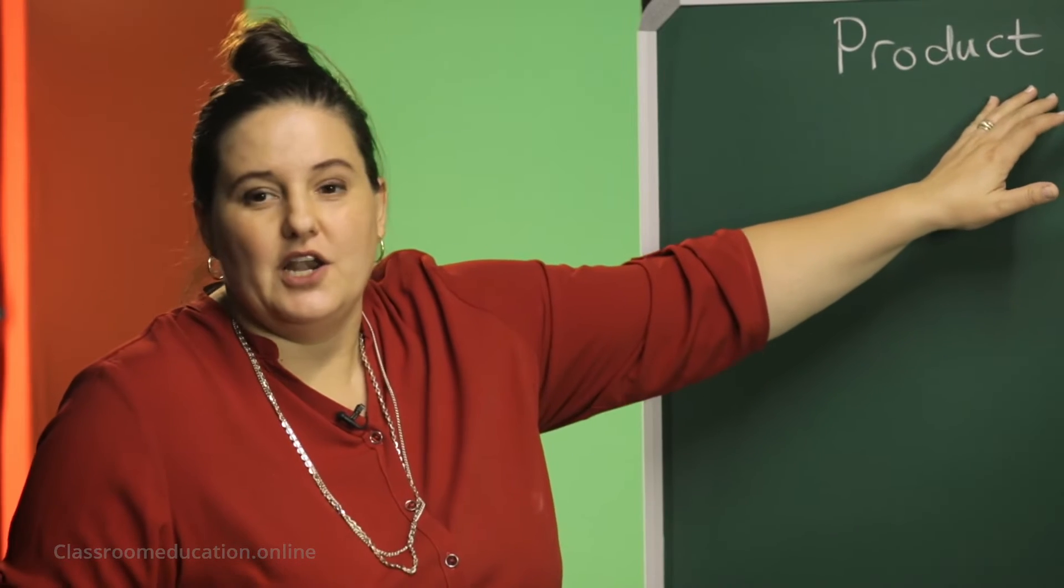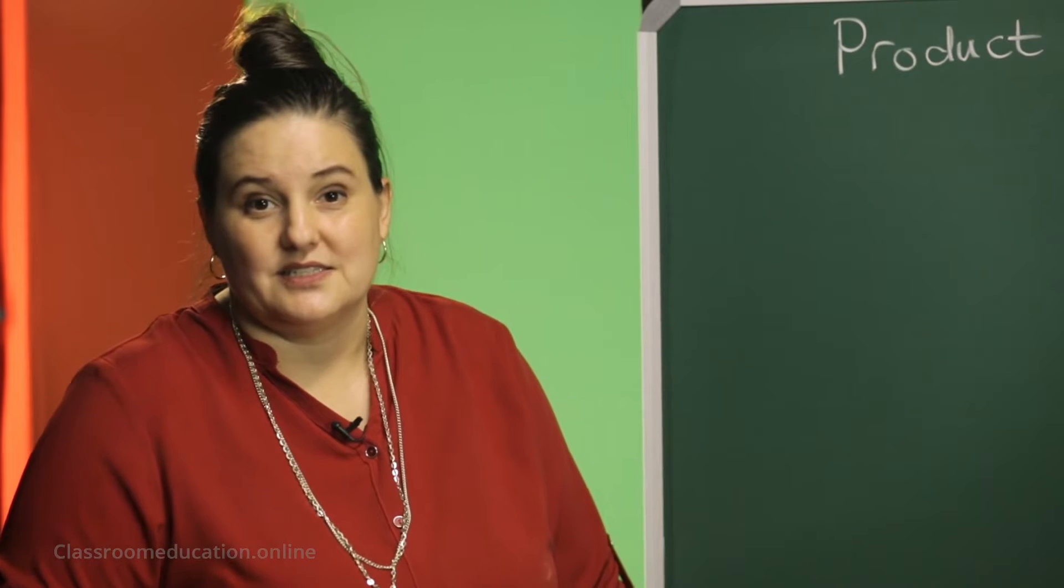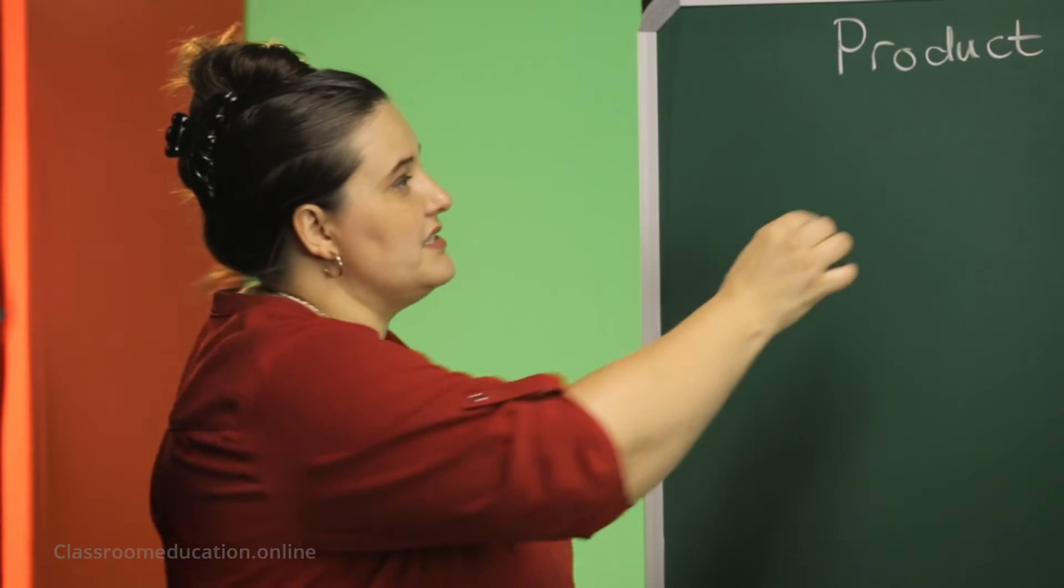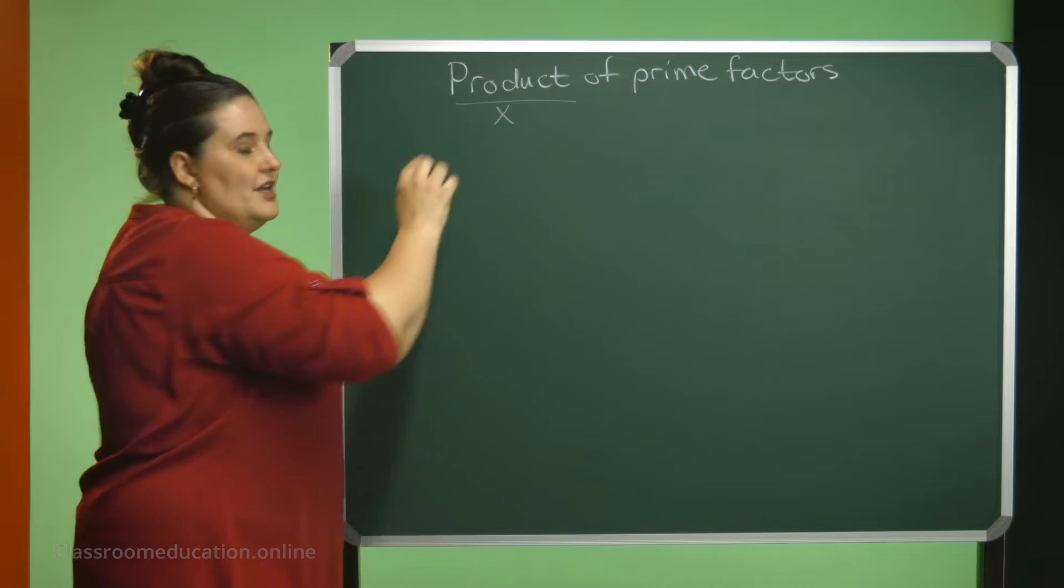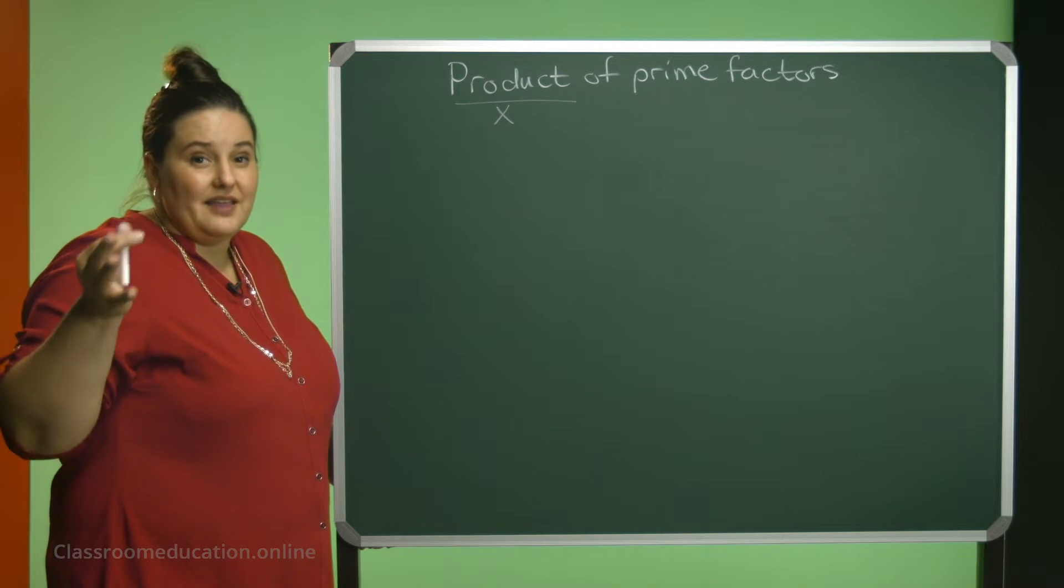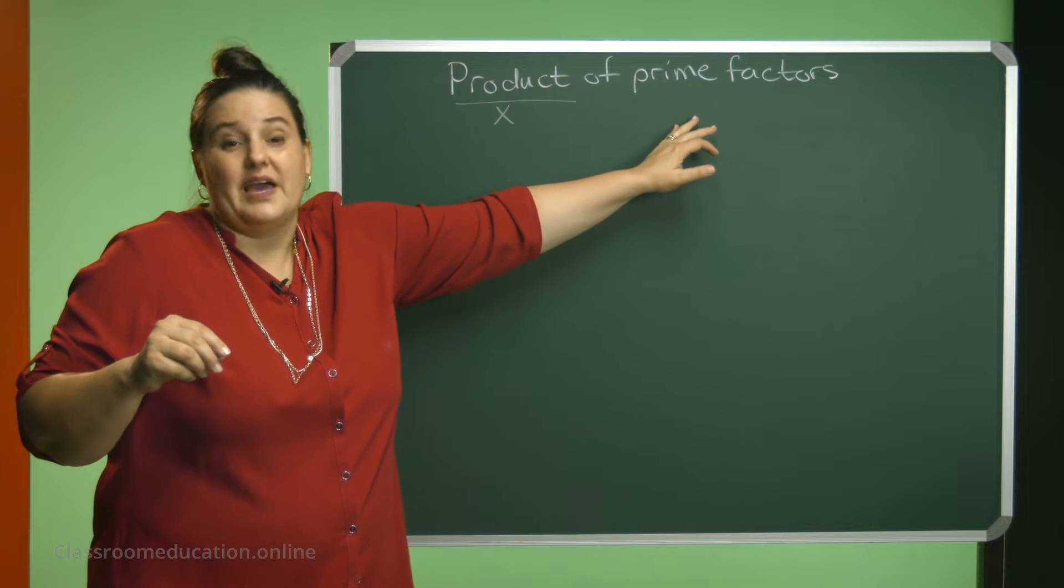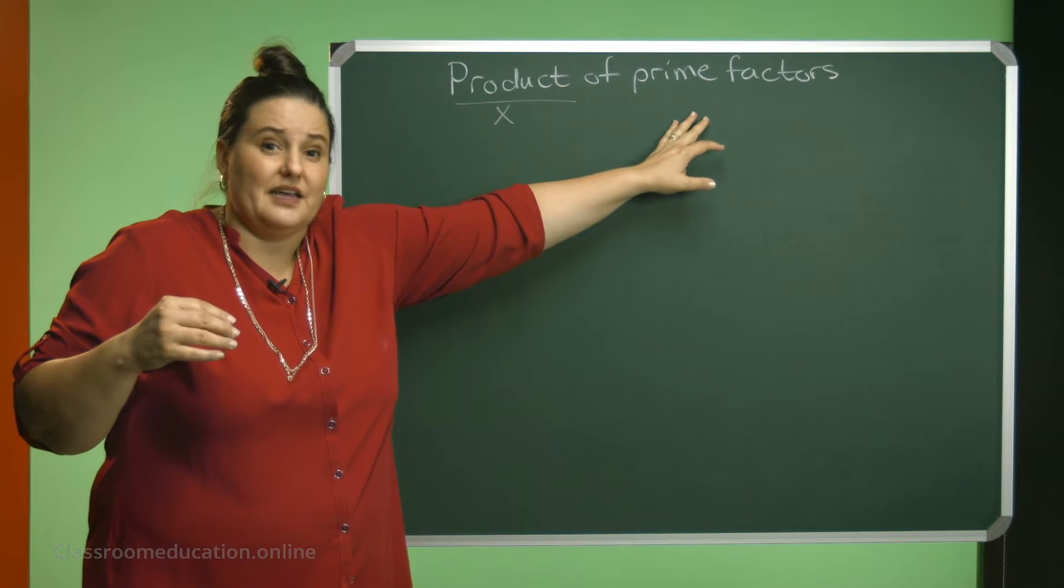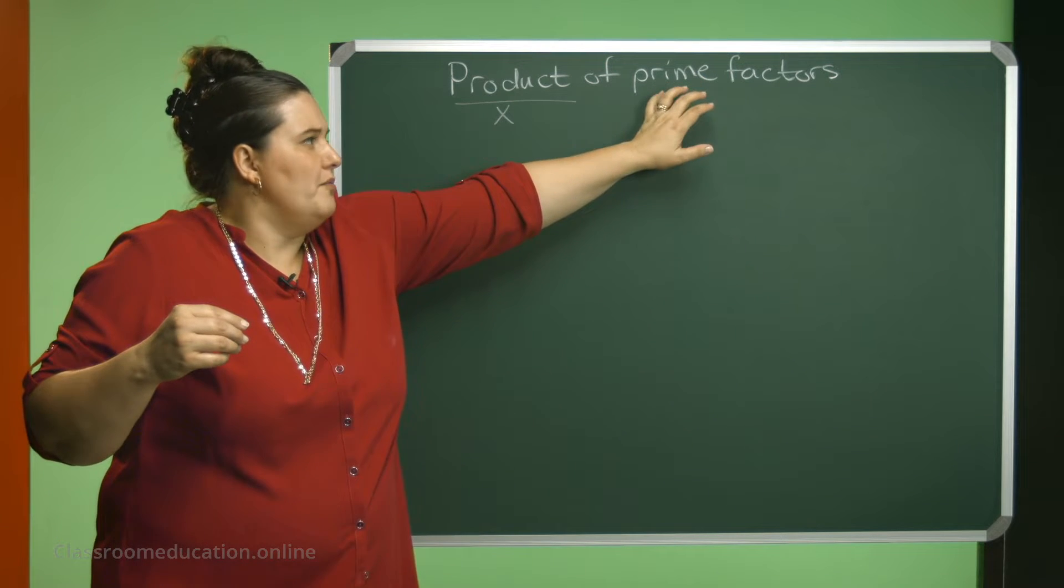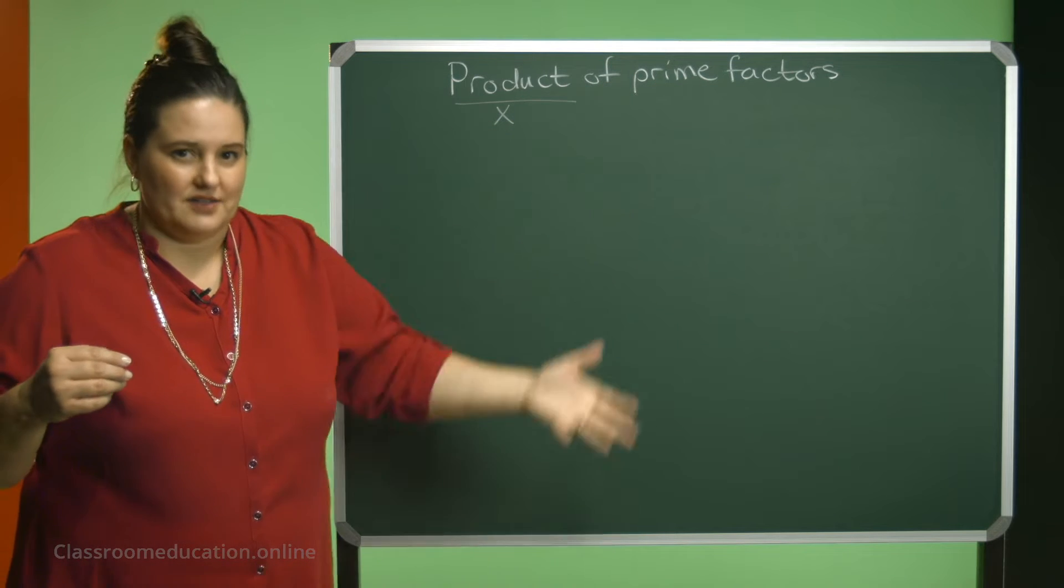Today we are looking at the product of prime factors. First thing, what does product mean? Times. So I want you to write a number in terms of other numbers, and those other numbers will be prime factors. These prime factors need to be multiplied by one another to get to the answer.